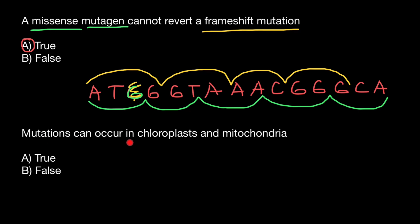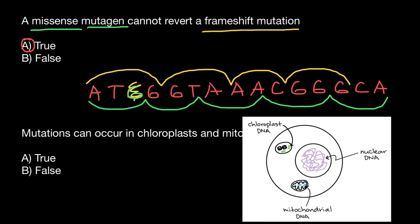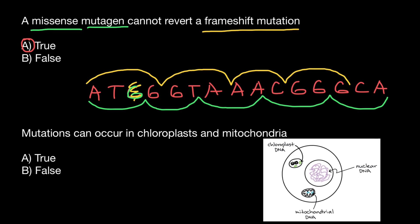The next statement: mutations can occur in chloroplasts and mitochondria. Is it true or false? Take a look at this picture and you will see that DNA can be found in three places in a plant cell: in the nucleus, in the chloroplast, and also in the mitochondria. All of them have their own DNA. In the nucleus it is linear DNA in the form of chromosomes, and in mitochondria and chloroplasts it is circular DNA, just like in bacteria. Because these organelles contain DNA and DNA can mutate, the answer is: mutations can occur in chloroplasts and mitochondria. Yes, this is true. Mutations can occur in all organelles that contain DNA.